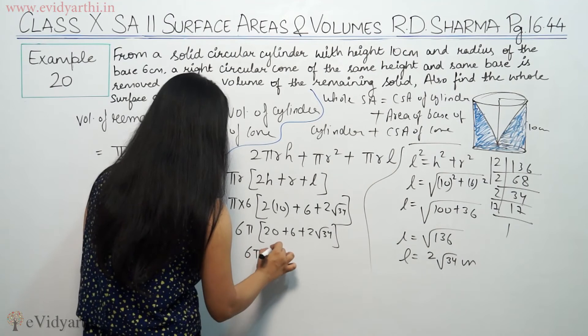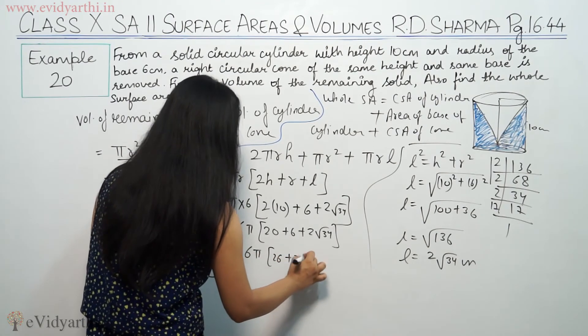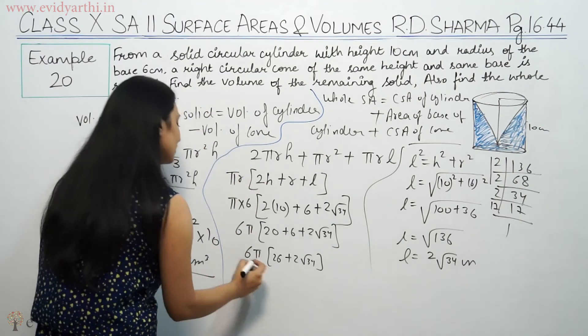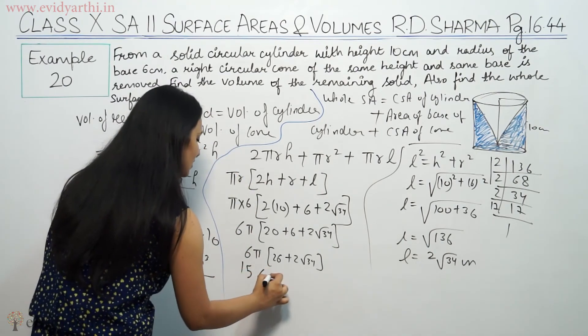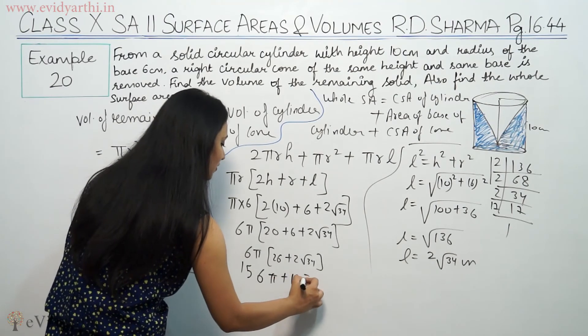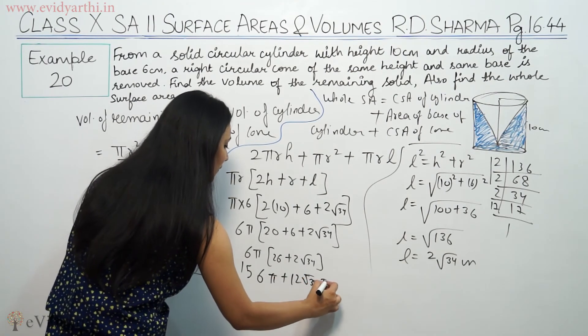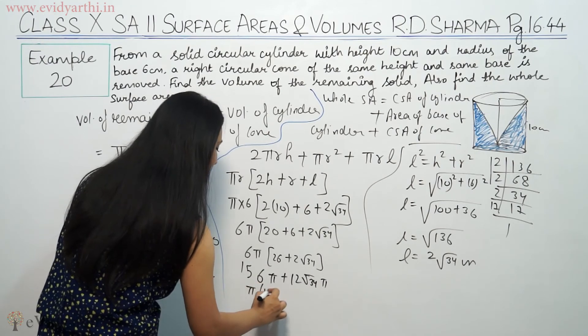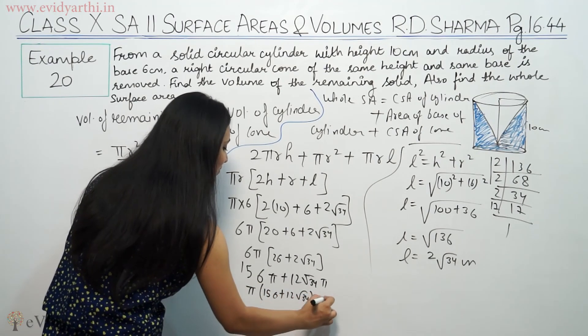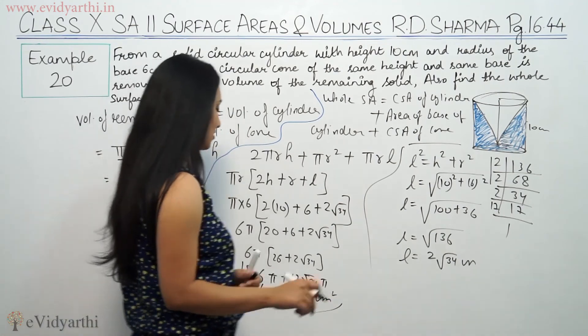So π times 6 times (20 + 6 + 2√34). This gives 6π times (26 + 2√34). Multiplying: 156π + 12√34 π equals π(156 + 12√34) cm². This is the whole surface area.